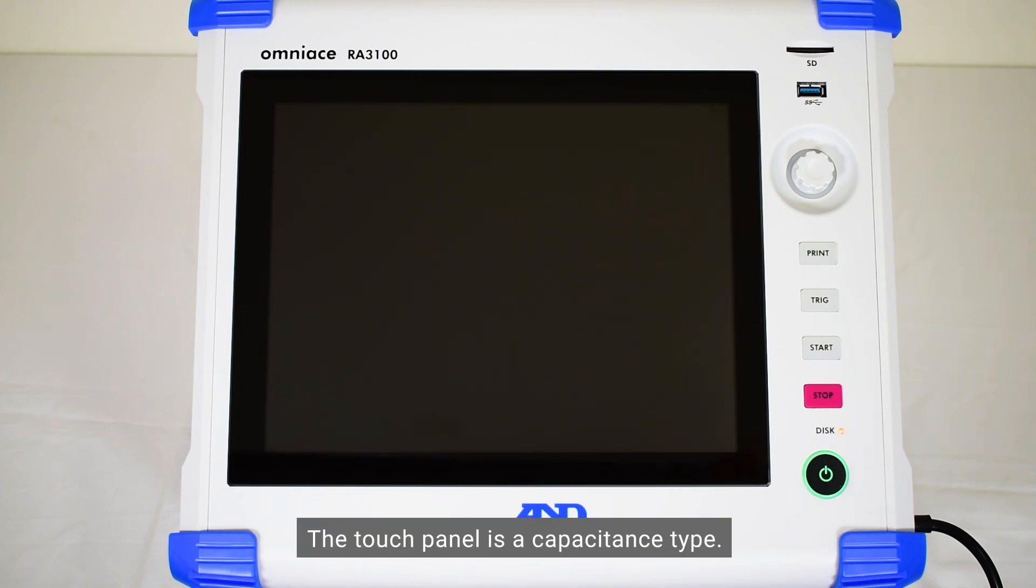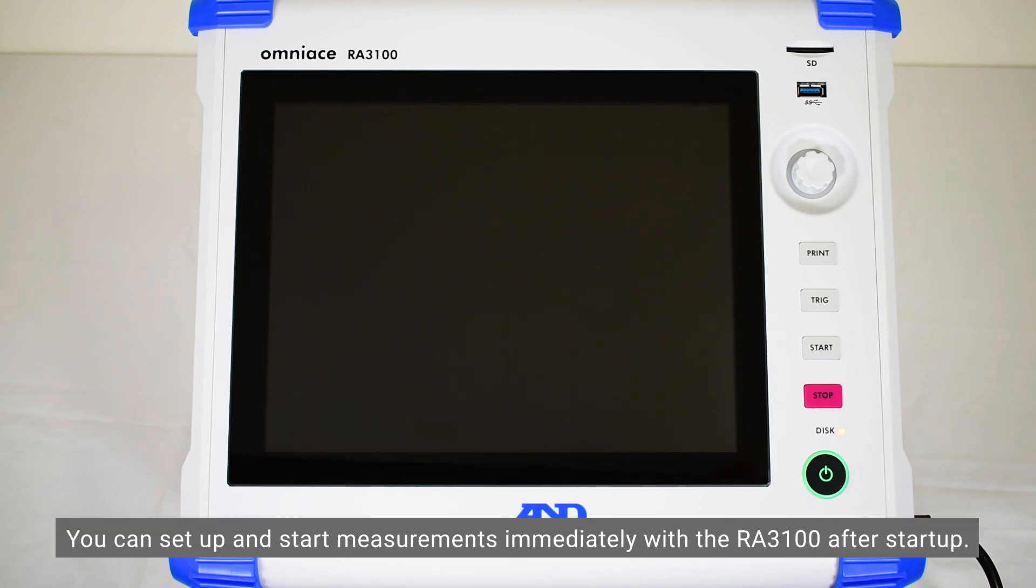The touch panel is a capacitance type. You can set up and start measurements immediately with the RA3100 after startup.